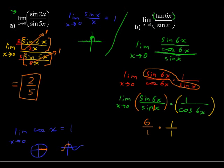So in the end, we get then 6 times 1, or just 6. So 6 is the answer to part B.